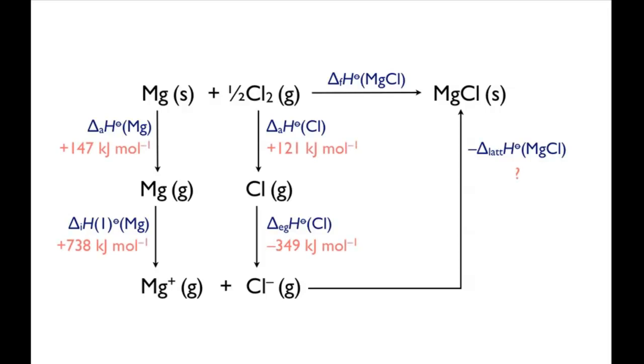The values of the first four of these enthalpy changes can be easily looked up. The enthalpy of atomization of chlorine is half of the bond dissociation enthalpy for Cl2, and it's a common mistake to use the bond dissociation enthalpy here instead of half of it.